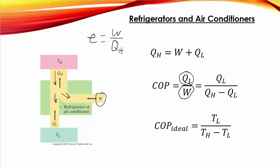Now, if you notice, we don't know about the relative sizes of these. Here, our efficiency was always going to be less than 1, and so our efficiency could be a percentage. In this case, you can have more QL than W.